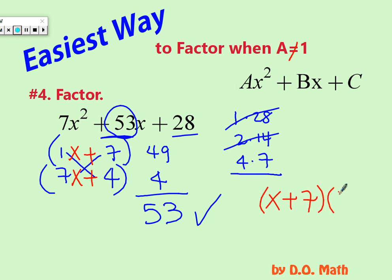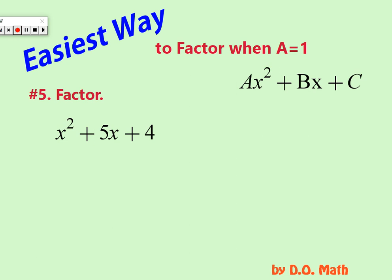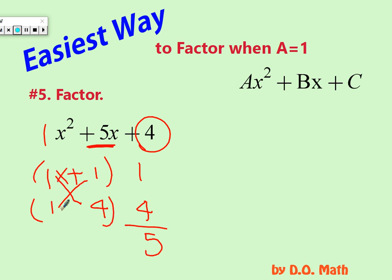Would this method work when A is equal to 1? Yes, of course. So here's 1. So then what do you do? It's 1 times 1. And here's 4. You can either do 1 and 4, or 2 and 2. And we are trying to get a sum of 5. So it has to be 1 and 4. And 1 times 4 is 4, 1 times 1 is 1. And here's 5. So then here's our factors. x plus 1, x plus 4.